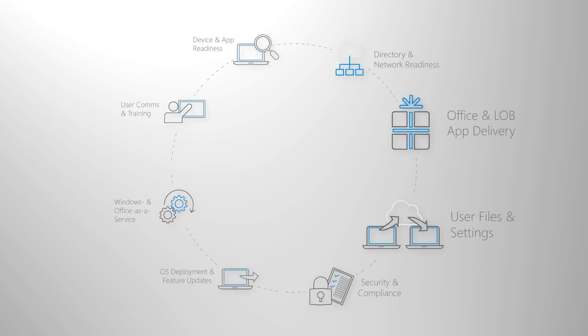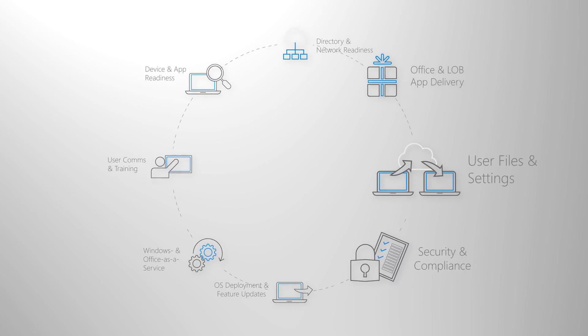So that was an overview of a few core options for app delivery as you prepare for your desktop deployment. Next up, we're going to cover your considerations for migrating user files and settings between Windows environments as you move to the next step in the deployment process wheel. To learn more about what we covered today, visit our modern desktop deployment center and keep following our Desktop Deployment Essentials series here on Microsoft Mechanics.